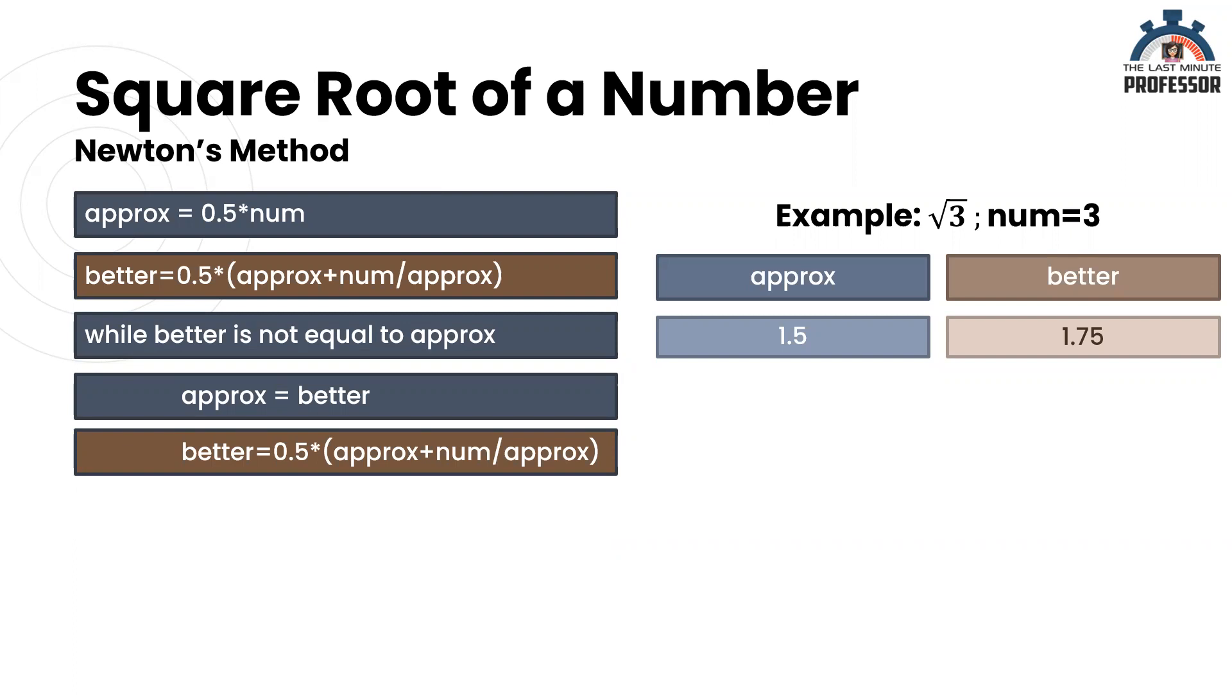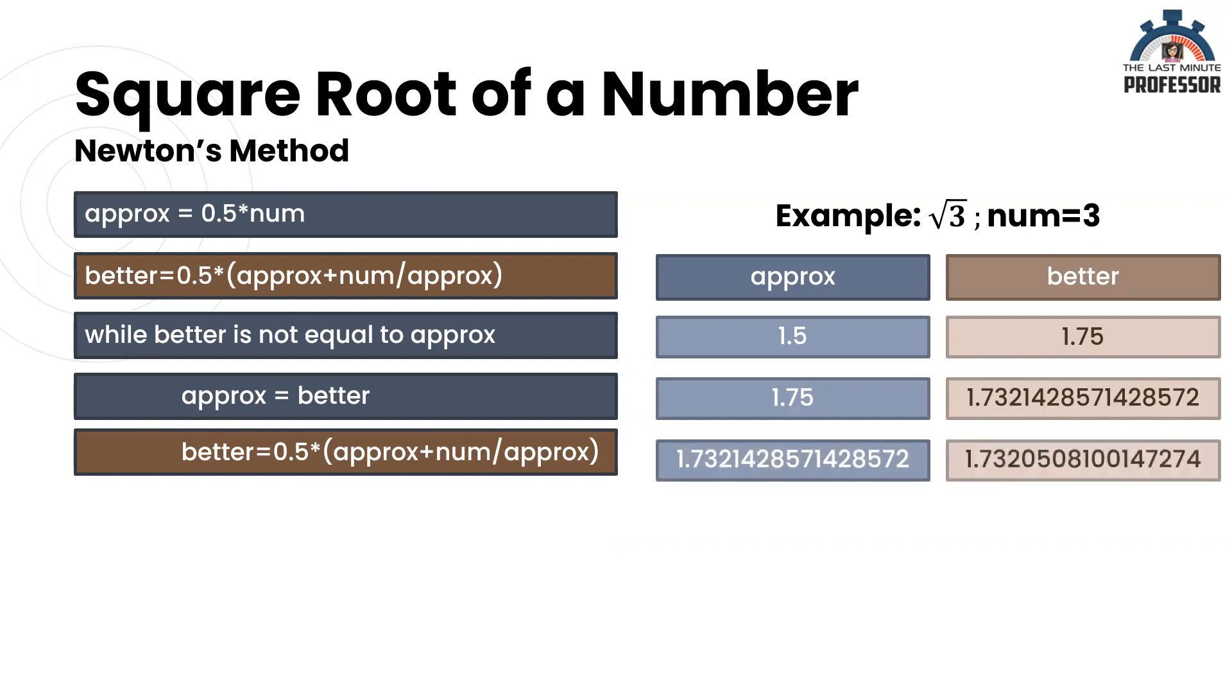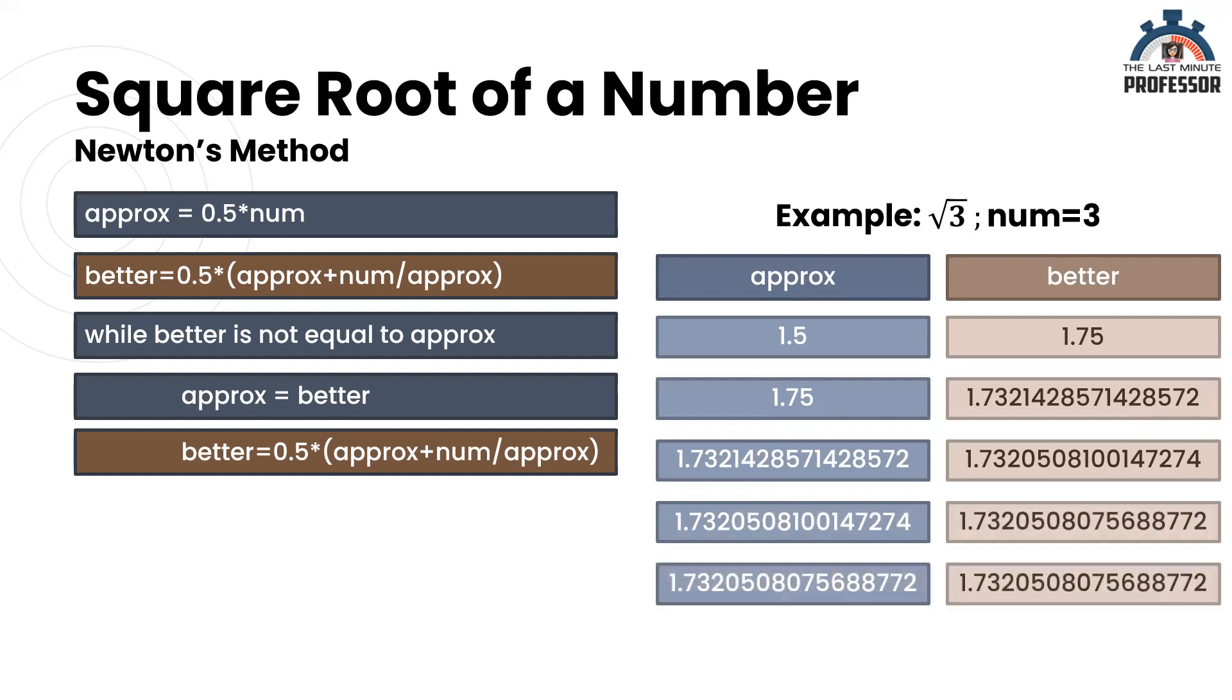Our new approx will be the previous better value. That is, approx is equal to 1.75. Let us recalculate better for this new approximate value. Again, approx and better are not equal. Repeating the steps. Again, both are not equal. Repeat the steps. Both are not equal. Repeat the steps. Now, both are equal. So we stop here. That's the square root.